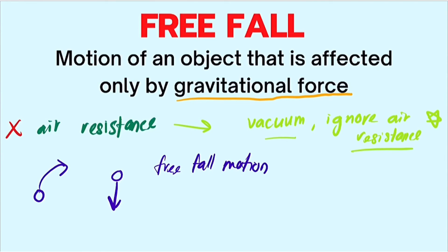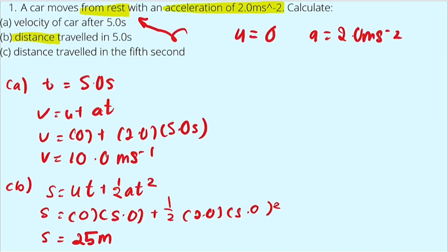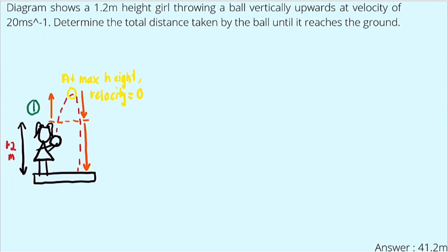Because in freefall motion the object is only affected by gravitational force, the acceleration of the object is constant — it equals the gravitational acceleration, g, which is 9.81 meters per second squared. You can use the same linear motion equations we just learned, but replace A with G and insert the value 9.81.